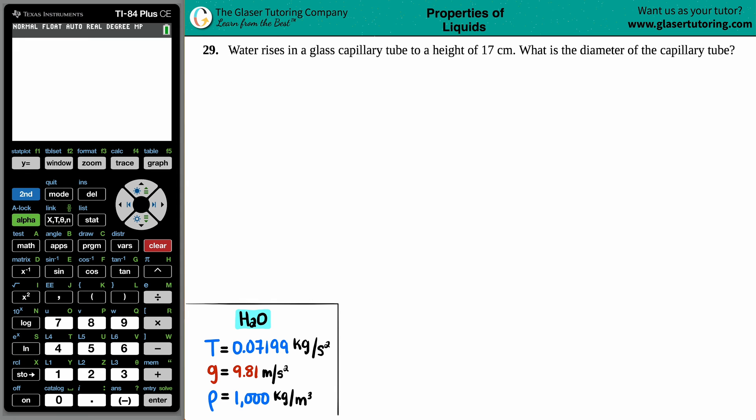Number 29: Water rises in a glass capillary tube to a height of 17 centimeters. What is the diameter of the capillary tube? Okay, so we're talking about capillary action here. Anytime we're talking about capillary tubes and we have numbers, we've got a height, they want a diameter, there's only one formula that we could possibly use.